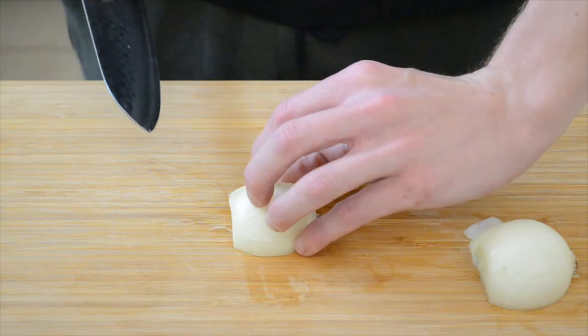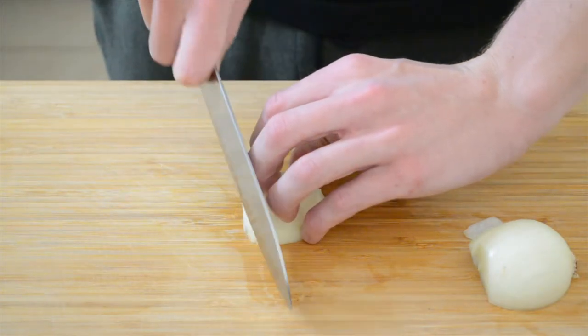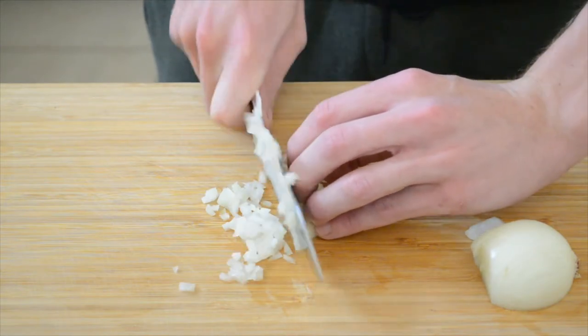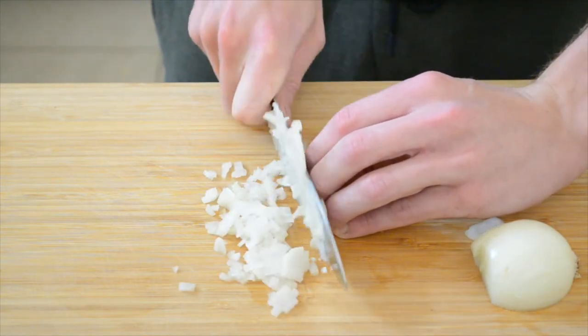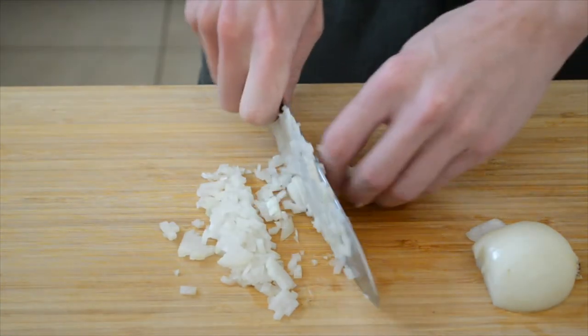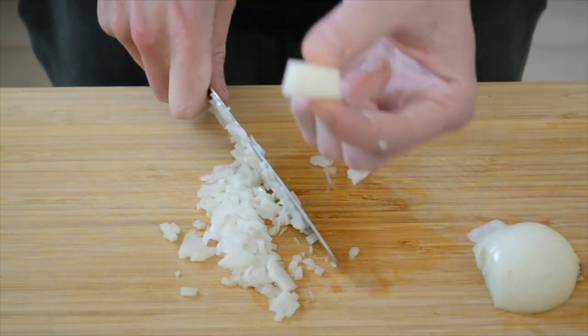Then what you want to do is grip it tightly, come across and make thin slices. Slicing all the way down to the root. So all you're left with is that.